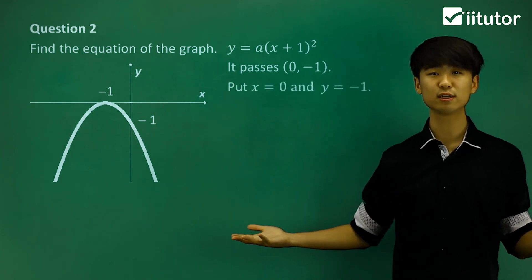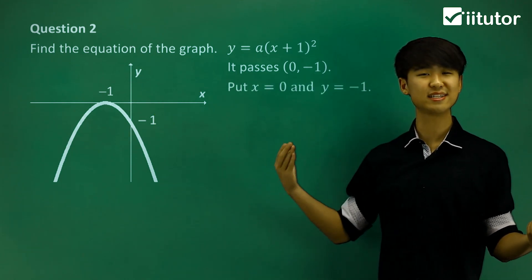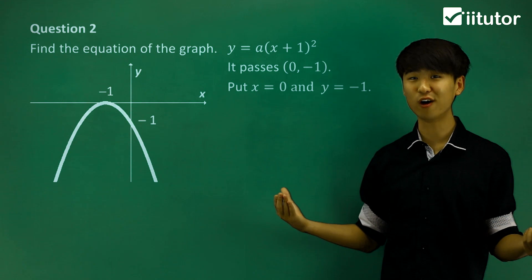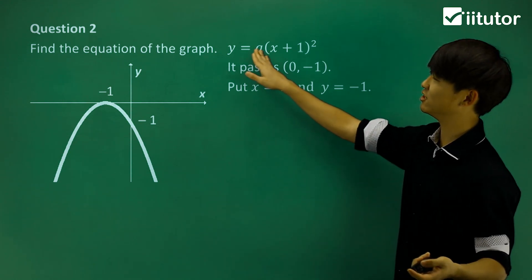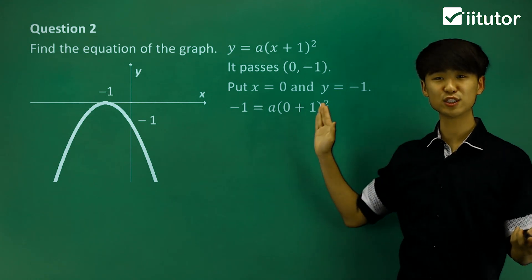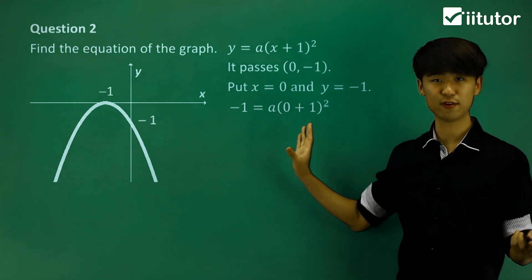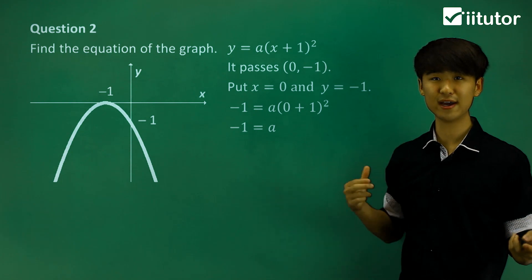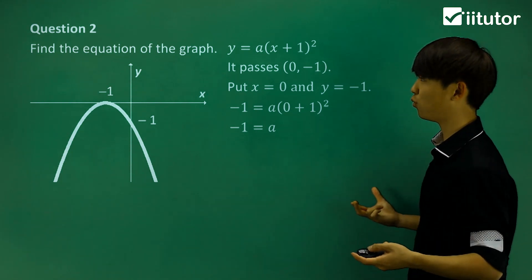So I want you to put x is equal to 0 and y is equal to negative 1 into my equation. So if we do that, we're going to be able to find a. So put your numbers in and let's simplify and we find a is equal to negative 1.